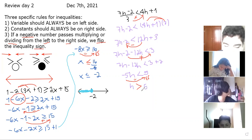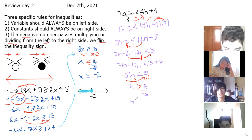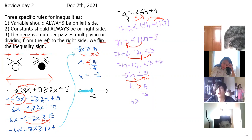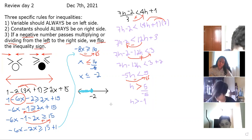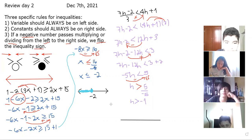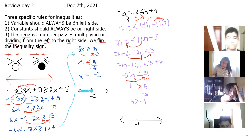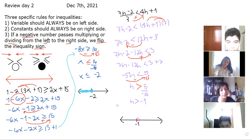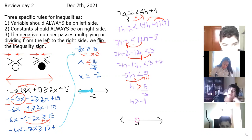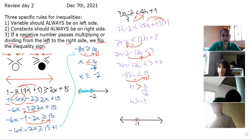H is greater than negative 1. Am I done? No — we need to graph. Use a ruler. Pick where negative 1 goes on the number line. The circle is open because it's just 'greater than,' not 'or equal.' It goes to the right. That is exercise number two.